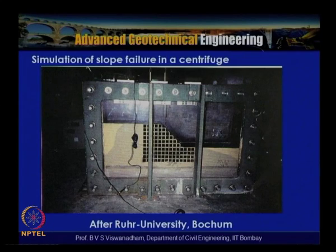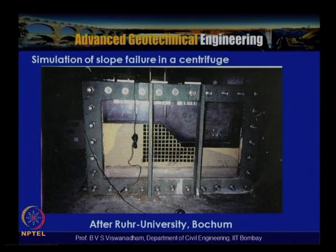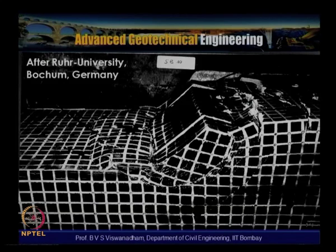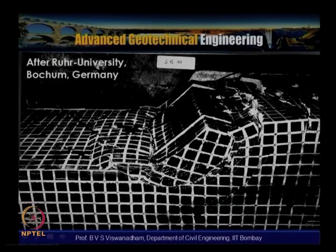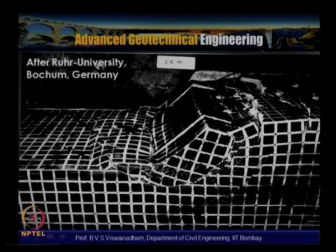Let us see some typical slope failures in a centrifuge — this is from Ruhr University Bochum. A front view of the slope before testing is shown here, one of the traditional earlier tests of a slope in kaolin clay. Once the slope is subjected to failure, we can see the development of the slip surface, the heaving portion, and tension crack formation. This slope is formed with saturated consolidated clay.